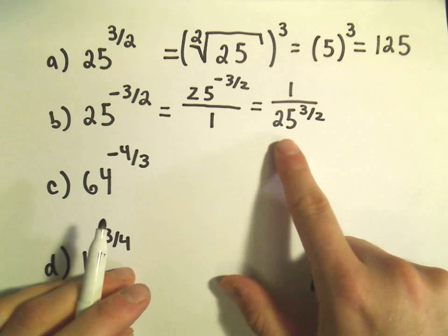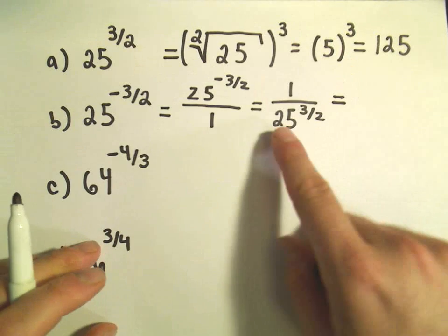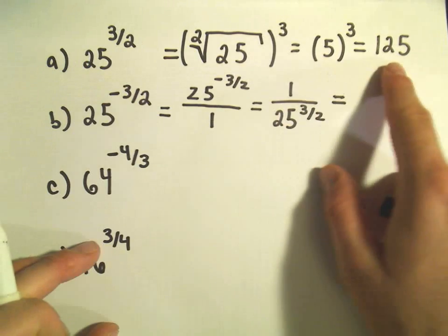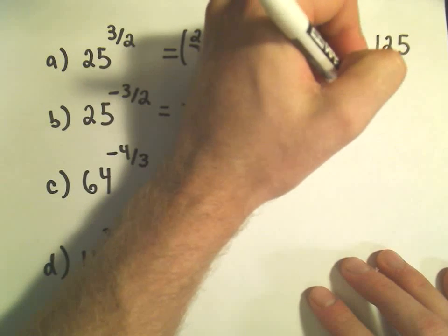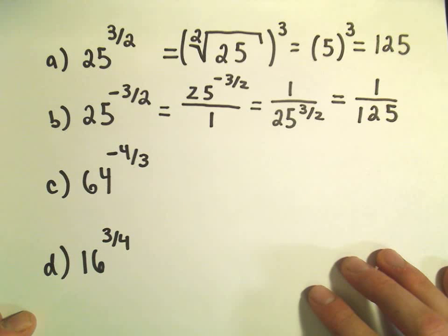So now we'll have 25 to the 3 halves in the denominator, but we know what 25 to the 3 halves is. That's what we already figured out in part A. So in this case, we'll end up getting 1 over 125 as our solution.